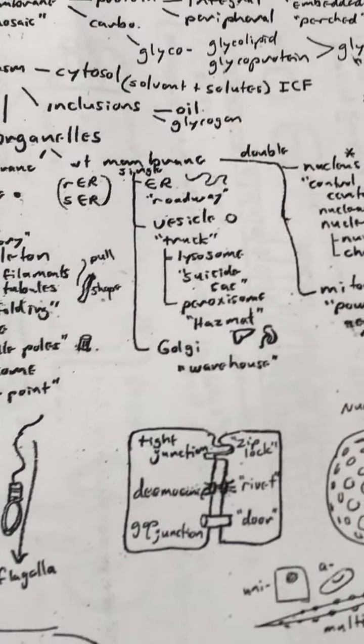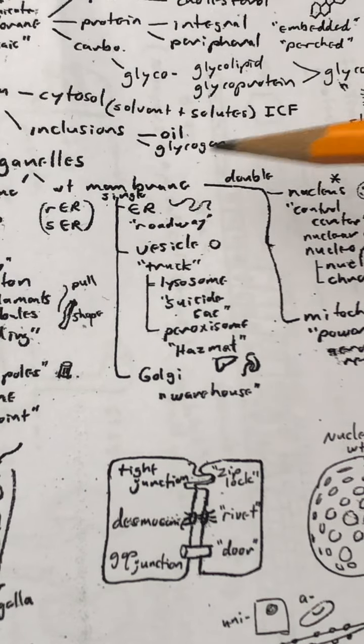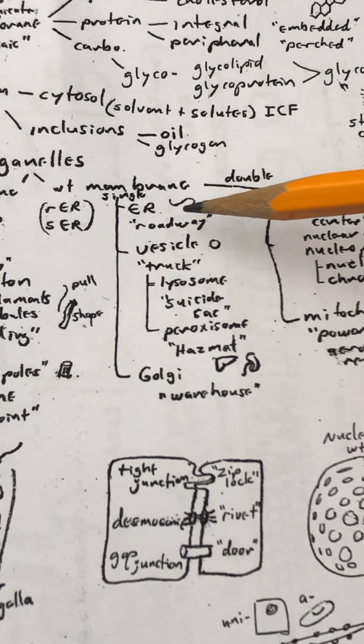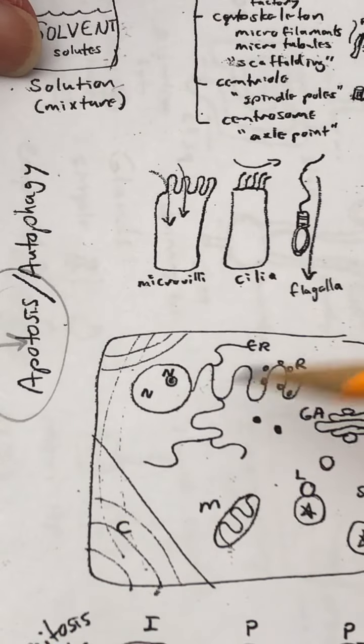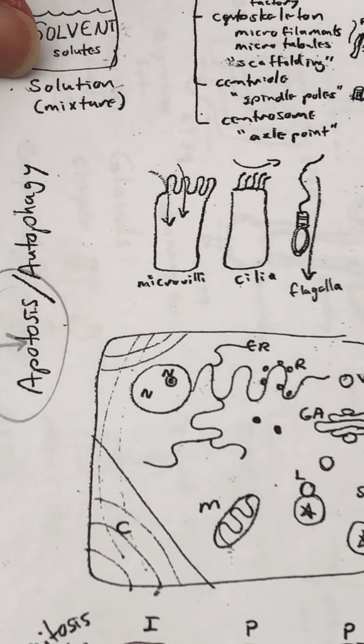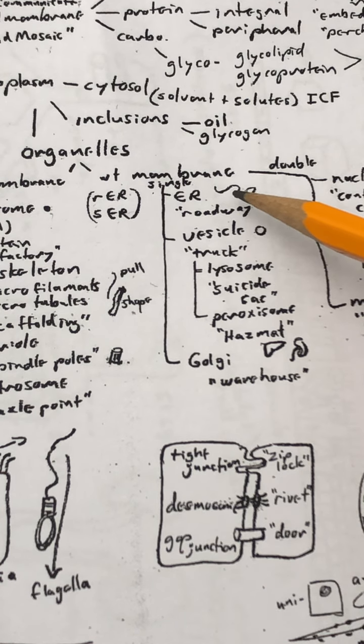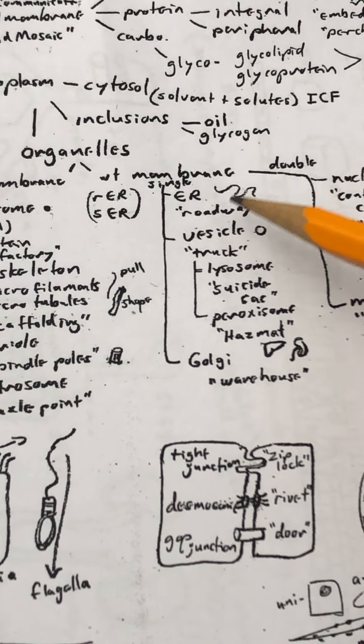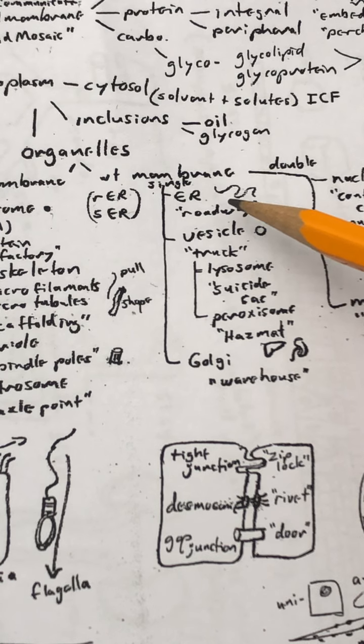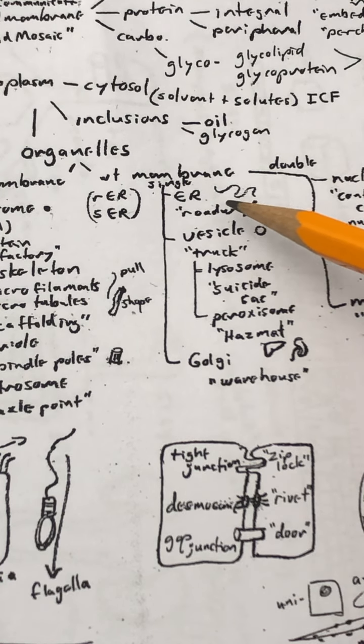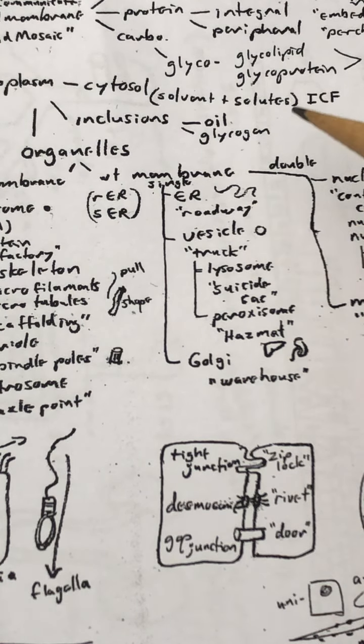We call the ER by nickname a roadway, an extensive roadway. It's found throughout the cell, and its main function is to move materials to different regions of the cell. It is a series of flattened tubes and sacs that have a lumen inside, and they are made up of phospholipid bilayers, just like the cell membrane's basic structure.